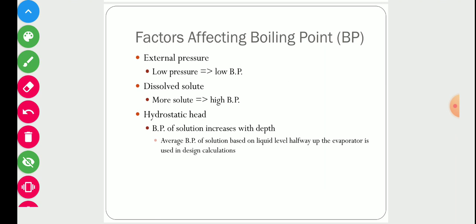The second factor affecting boiling point is dissolved solute. If we have pure water, the boiling point is lower, but if we add solute to the water, the boiling point increases. The more the amount of solute, the higher the value of boiling point.